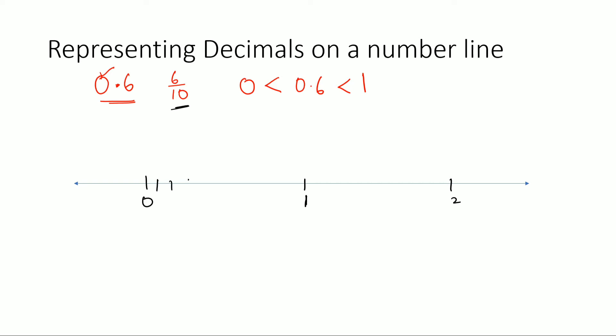So 10 equal parts. Let's say it's 1, 2, 3, 4, 5, 6, 7, 8, 9, 10. Assume these to be all equal. Now the first point here would be 0.1, the second point would be 0.2. So if I go on like this, then it would be 1, 2, 3, 4, 5, 6. This point here is 0.6.